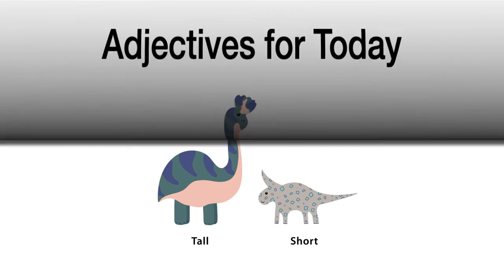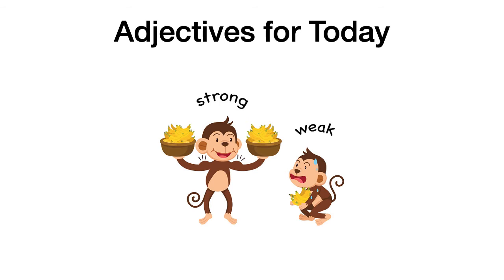Ok. Next. Look at the monkeys. We've got a strong monkey and a weak monkey. Strong is fuerte. He's lifting two bowls full of bananas — está levantando dos boles llenos de bananas, so he's strong. And the next one is weak because he's just lifting a few bananas and he's having some trouble. So: strong, fuerte; weak, débil.